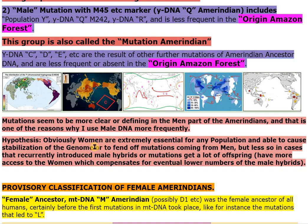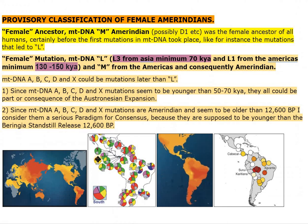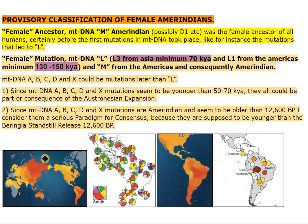Hypothesis: Obviously women are extremely essential for any population and able to cause stabilization of the genome or to fend off mutations coming from men — but less so in cases where recurrently introduced male hybrids or mutations get a lot of offspring and have more access to women, which compensates for eventual lower numbers of the male hybrids.